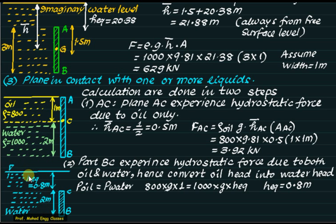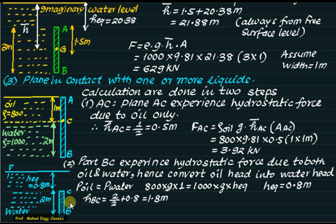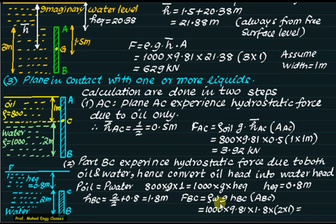With the imaginary water surface established, the tank is entirely filled with water — a simple calculation. From the imaginary free surface level, h-bar for BC = 0.8 + (2/2) = 1.8 meters. Force on BC = density × g × h-bar_BC × area_BC = 1000 × 9.81 × 1.8 × (2 × 1) = approximately 35.31 kN. The total hydrostatic force is the sum of force on AC and force on BC.